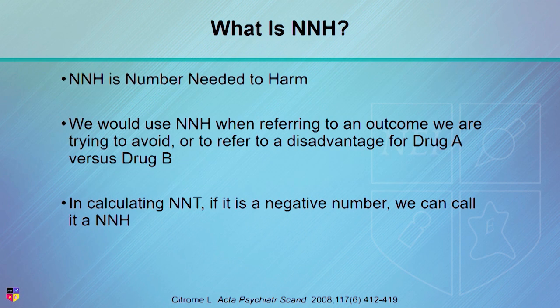What's number needed to harm? Number needed to harm is NNT's evil twin, and we refer to it when talking about events we would rather avoid — such as excessive sedation or weight gain as adverse events. When calculating the NNH, we want a high number. We want to treat more patients before having to deal with that adverse event. We'll get into some examples that make this more concrete in a moment.